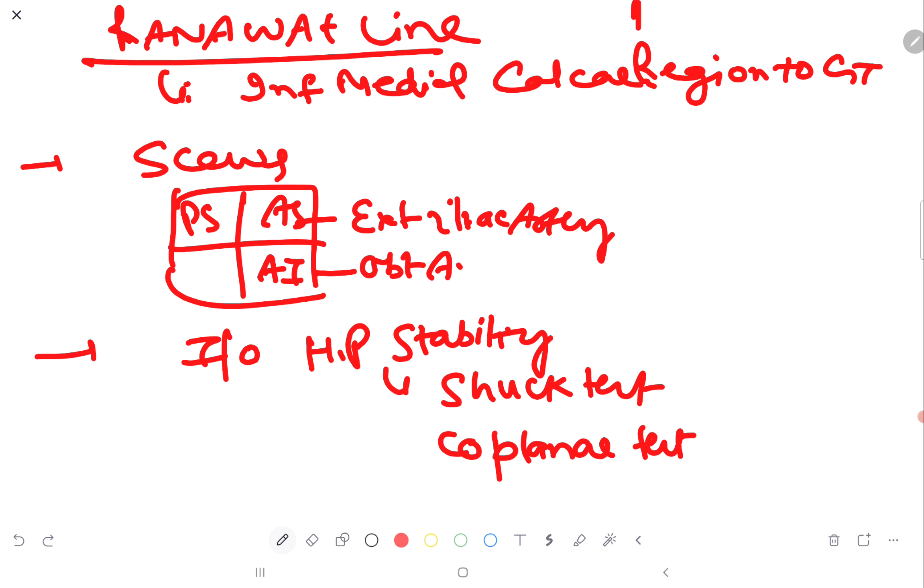Ranawat line is lying between the inferior medial calcar region to greater trochanter. Now acetabular screws are put in the posterior superior quadrant because in the anterior superior, there is external iliac artery. In the anterior inferior, there is obturator artery and in the posterior inferior, there is sciatic nerve.